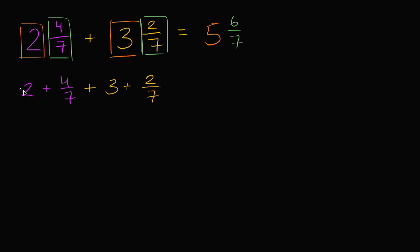And you could swap the order in how this happens. You could just switch the order and say this is going to be two plus three plus four-sevenths plus two-sevenths. And what we just figured out was that two plus three is equal to five, and that four-sevenths plus two-sevenths is equal to six-sevenths.